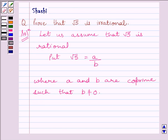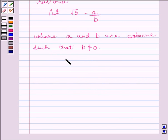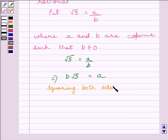Let us recall that two numbers are coprime if they have no common factor other than 1. Now, root 5 is equal to A upon B implies B root 5 is equal to A. Now, squaring both sides we get 5B square is equal to A square.